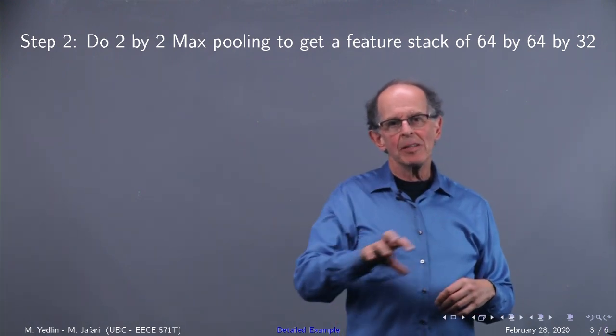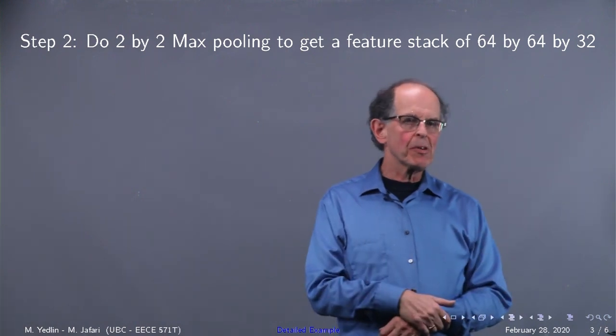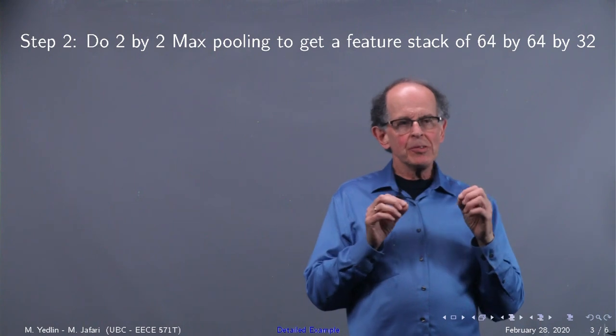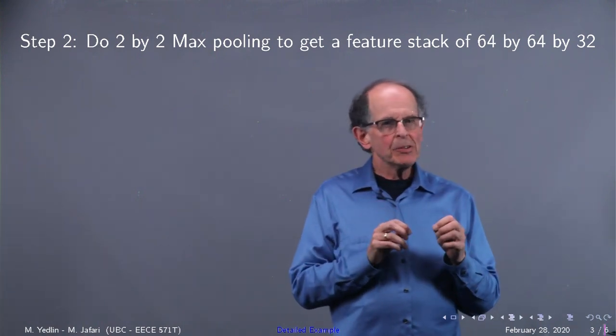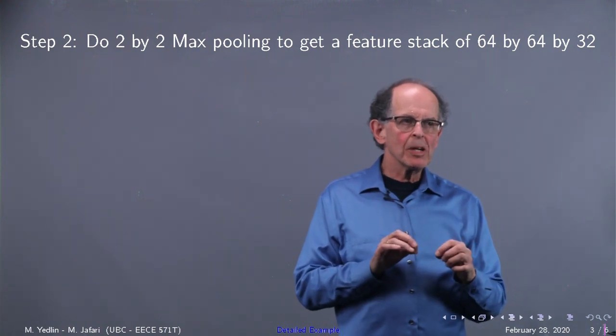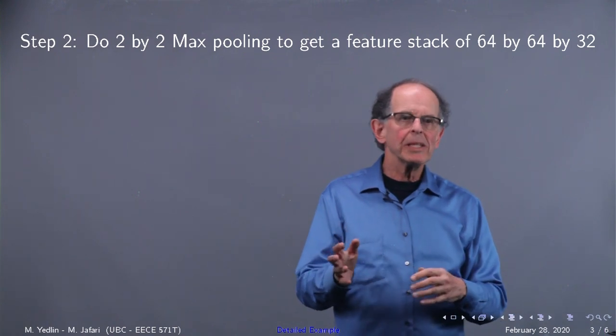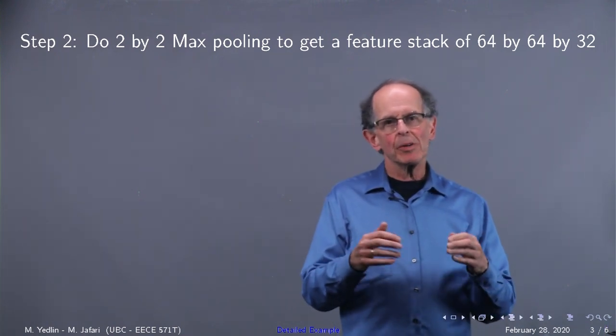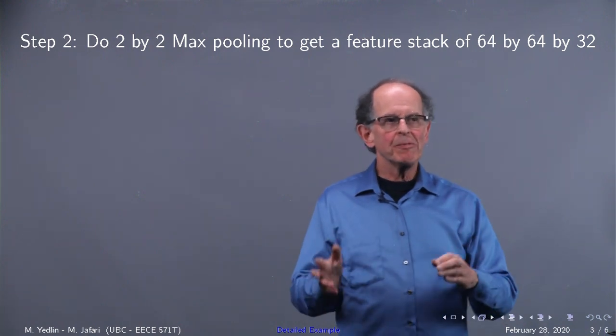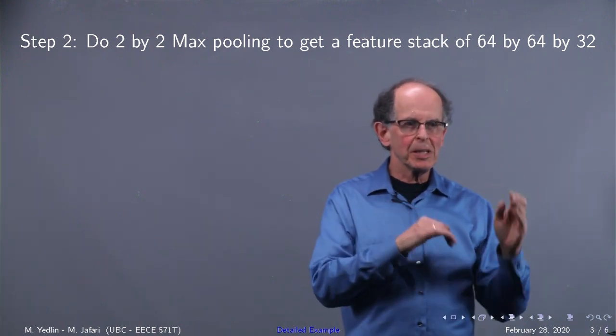Then you move it across the two dimensions of 64 by 64. Notice that we've lost information by going from 128 to 64. So we're not going to do 32 because we have 32 maps for 128 by 128. We're going to have 64 maps now of 64 by 64 by 64.